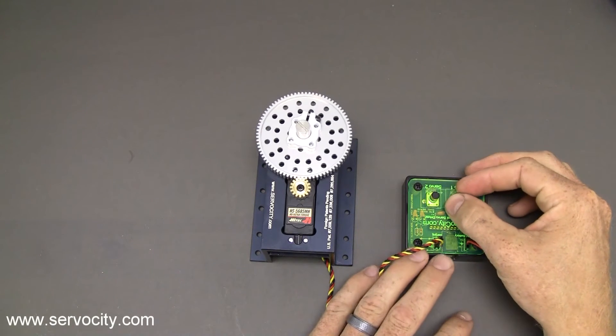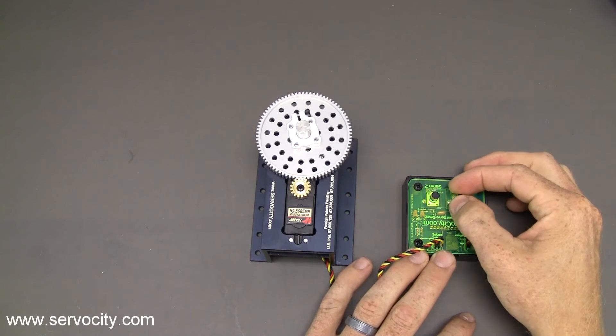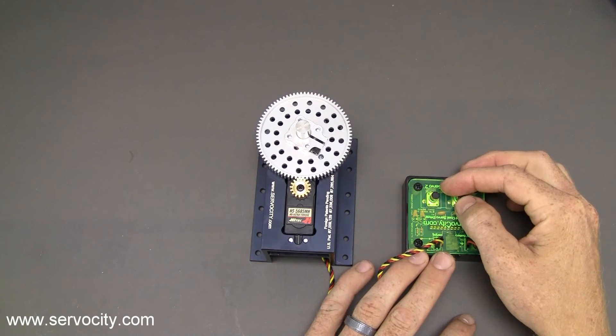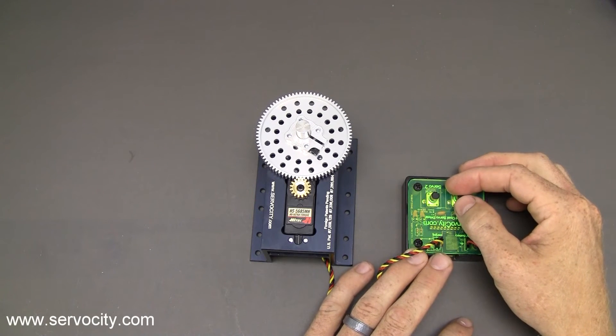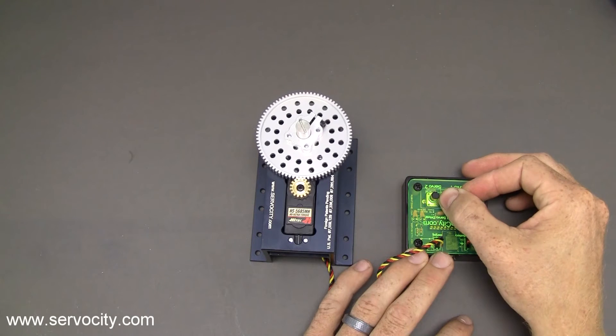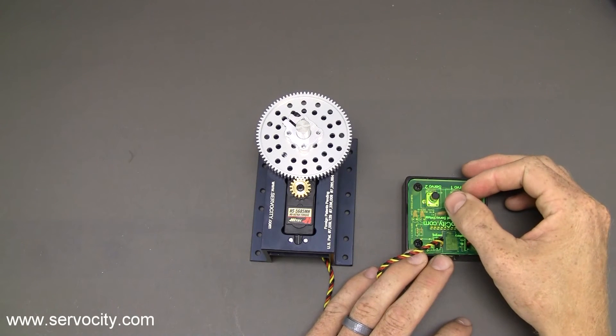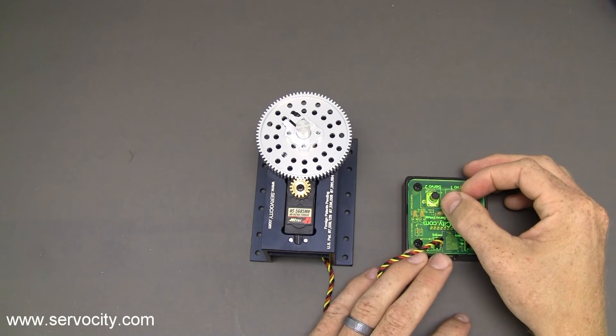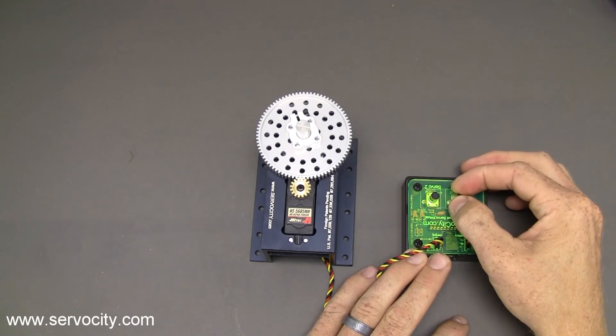So now you can see it still has the full use of the range, but I did adjust the center point. You can see that the rotation is about 45 to 50 degrees off to the clockwise direction.